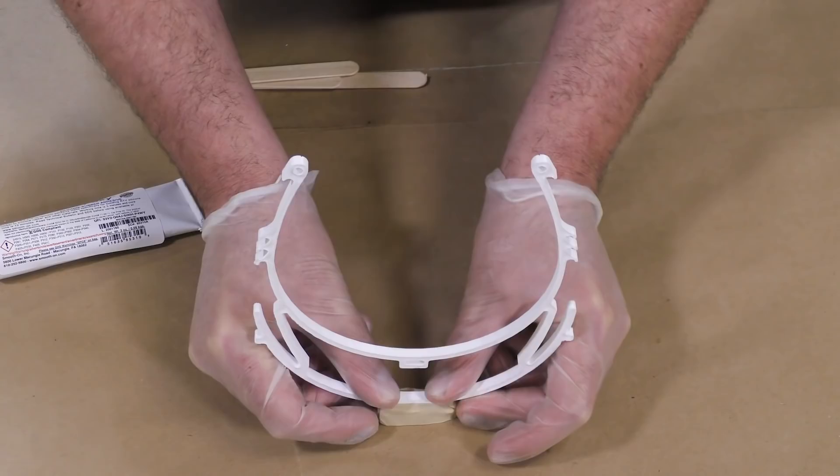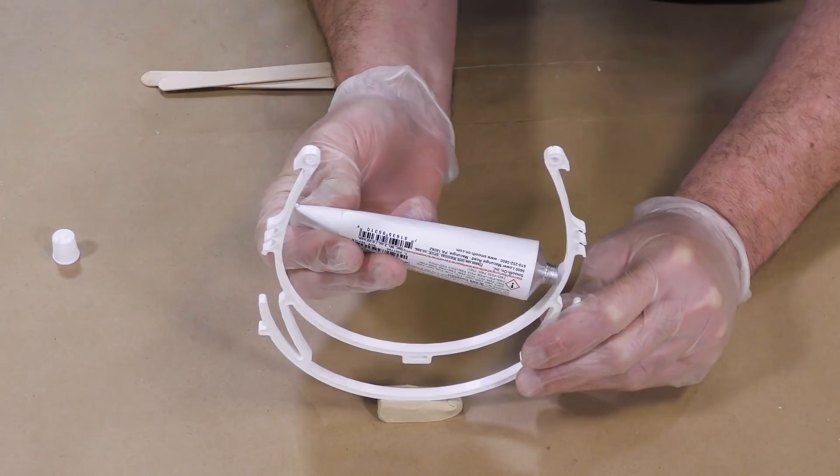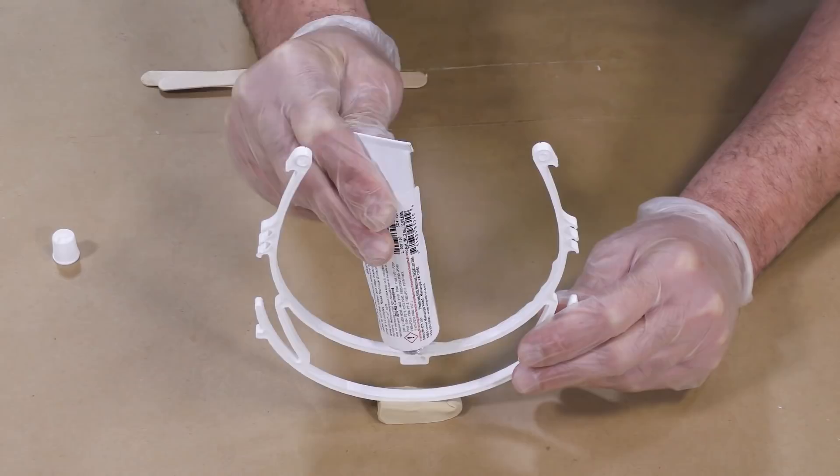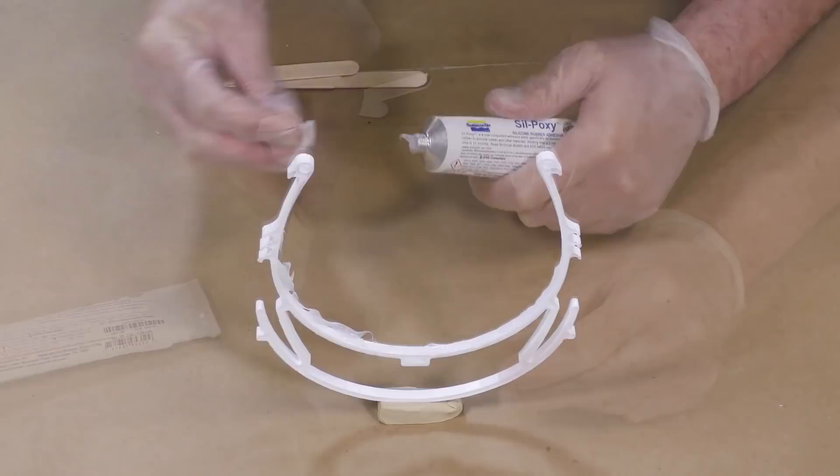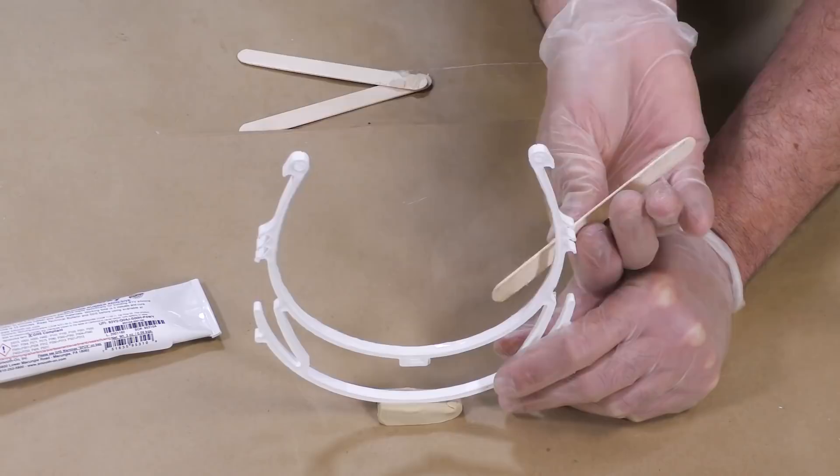We're going to put it on the visor where it actually meets the forehead. We're going to set this up, puncture this new tube, and apply some of that Silpoxy adhesive onto that rim, again where it's going to meet the forehead of the person wearing it. I'm going to squeeze out some of the silicone adhesive, then use a tongue depressor here, a small mixing stick, to just level that out a little bit so it has a nice and clean level. This is now allowed 12 minutes to cure before being put to use.